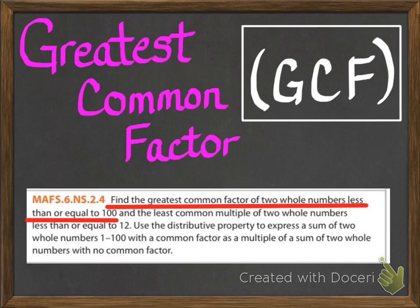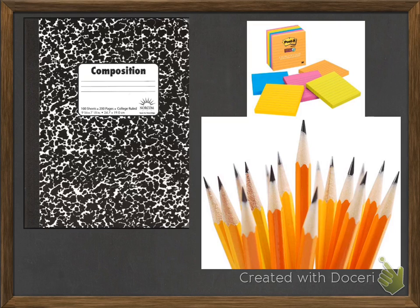Our main focus is to find the greatest common factor of two whole numbers less than or equal to 100. You need to make sure that you have your composition notebook opened to the very next available page, a sharpened pencil, and also your lined post-it notes.